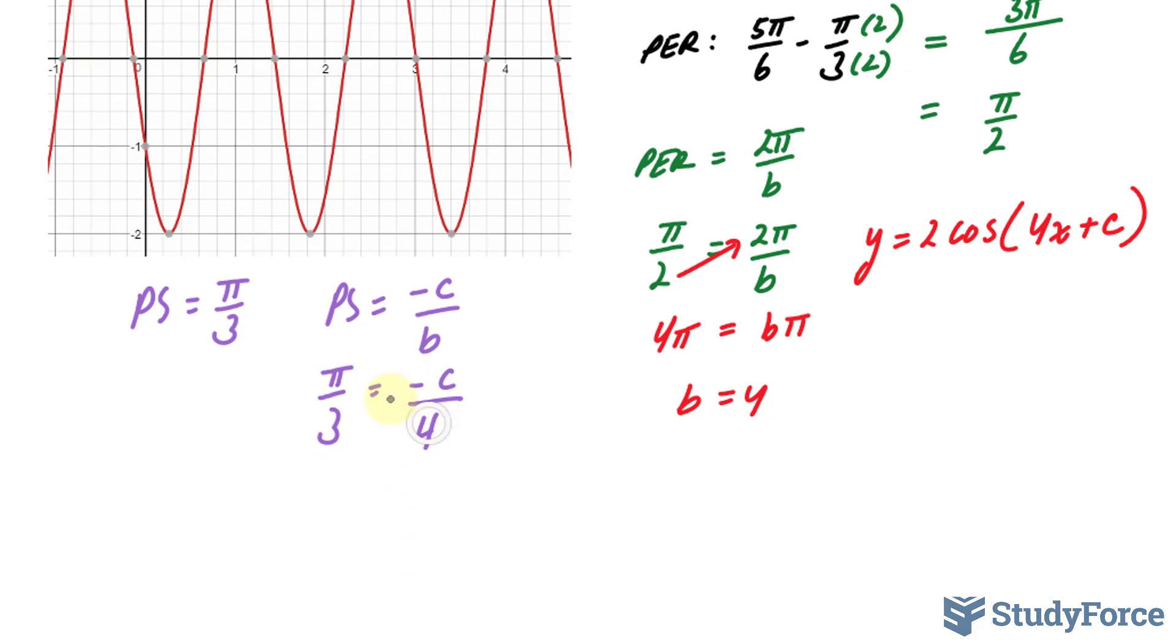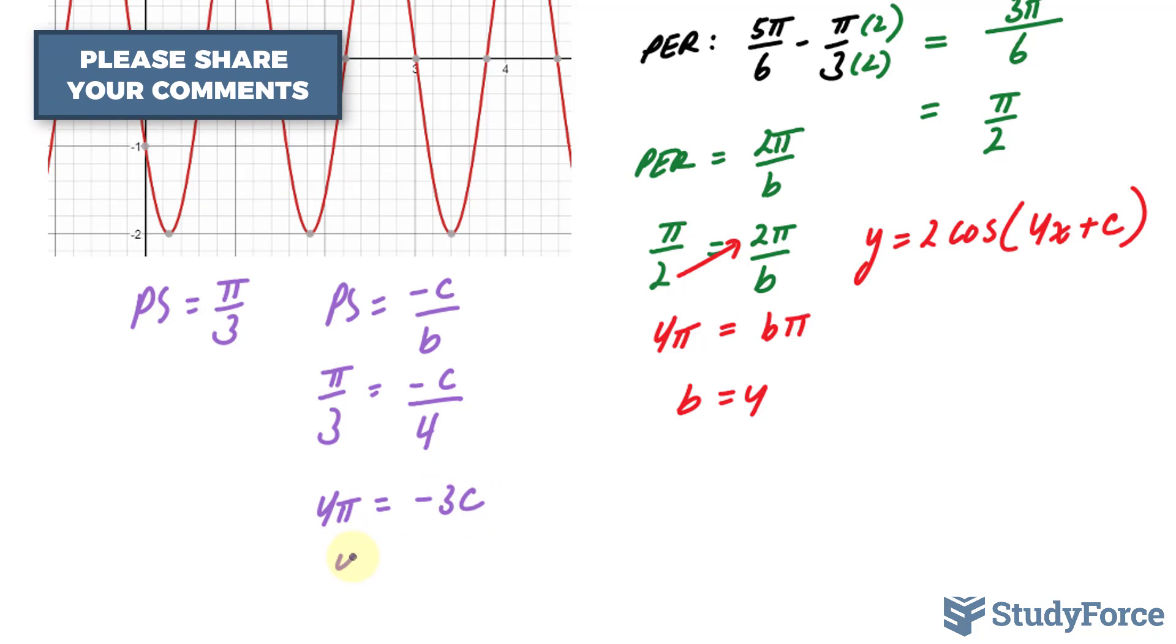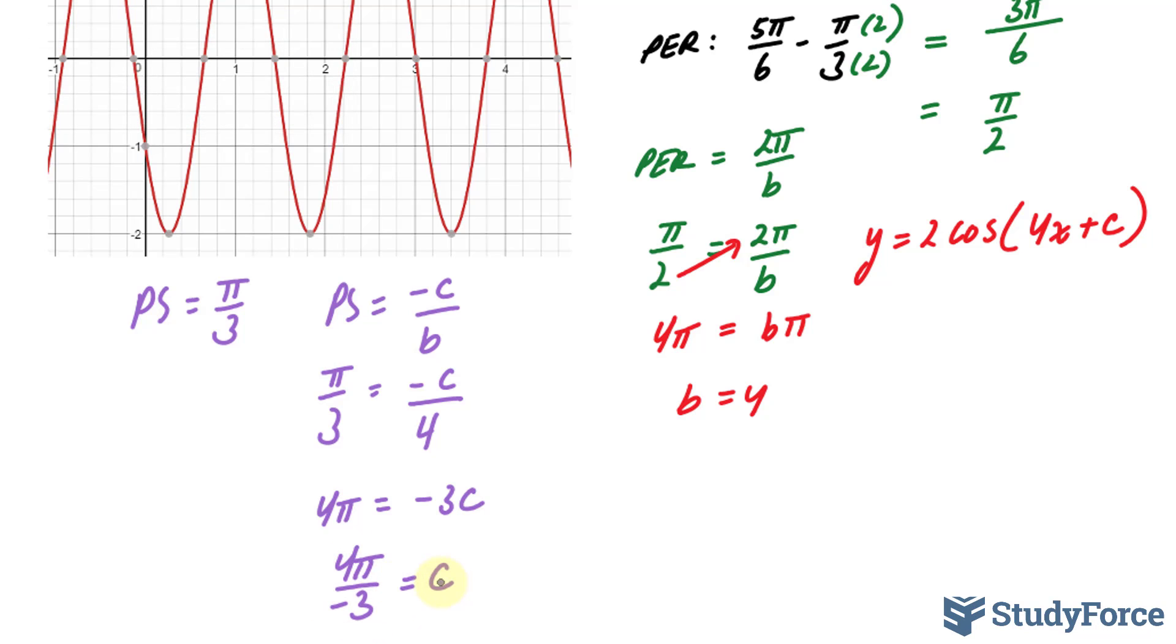A little cross multiplication here, we end up with 4 pi is equal to negative 3c. Solving for c, we get 4 pi over negative 3 is equal to c. So our final equation is y is equal to 2 times cosine 4x minus 4 pi over 3.